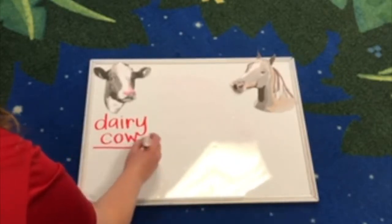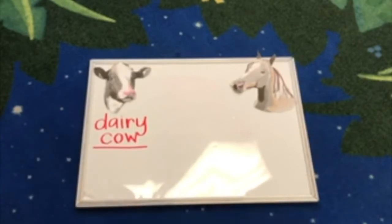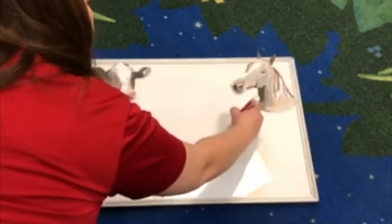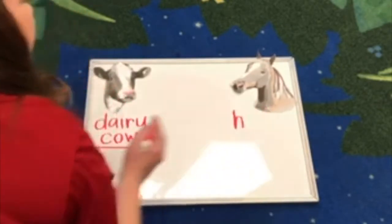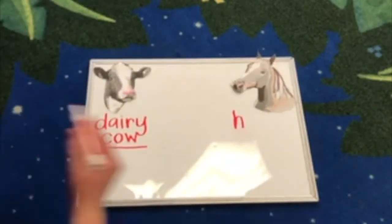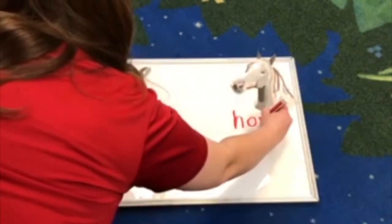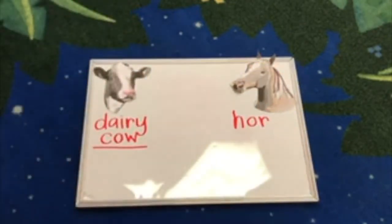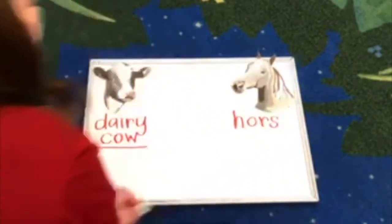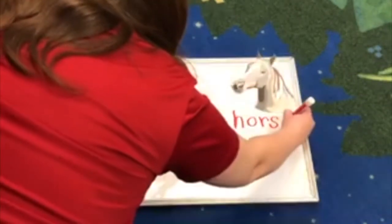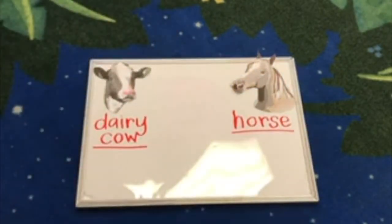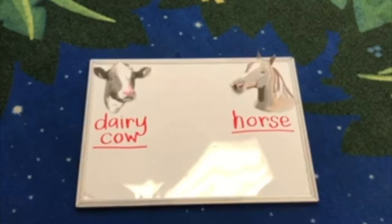Next we're going to spell horse. Spell it with me: H — which is our special letter of the month — O-R-S-E. This is how we spell the word horse. So again, we're going to be discussing the similarities between dairy cows and horses.